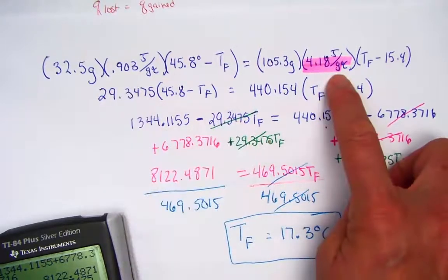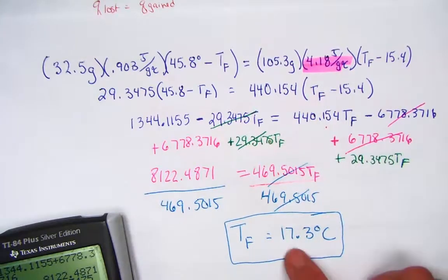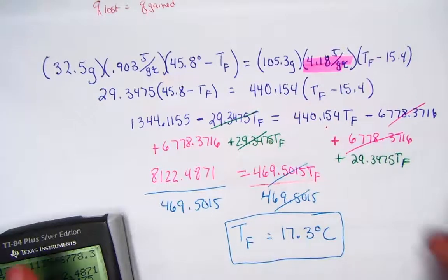The specific heat constant for aluminum, 0.9, water has over a four time greater value. So this number, indeed, makes sense. 17.3 degrees Celsius solves our problem.